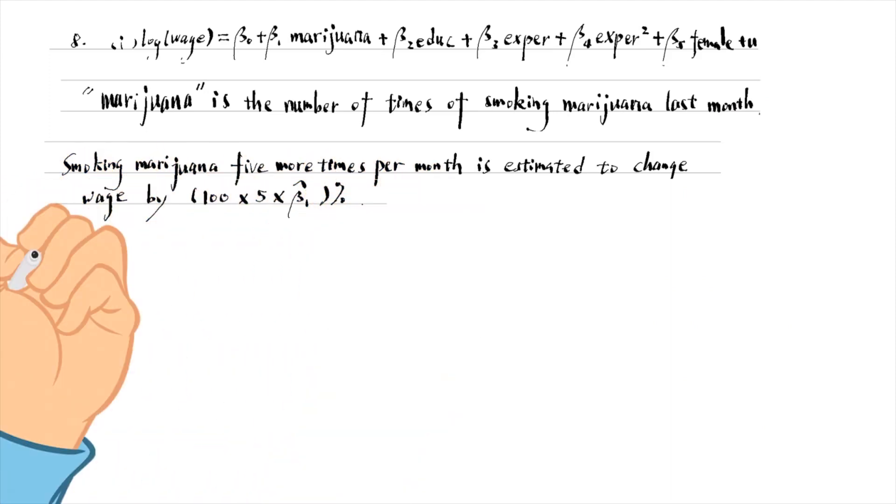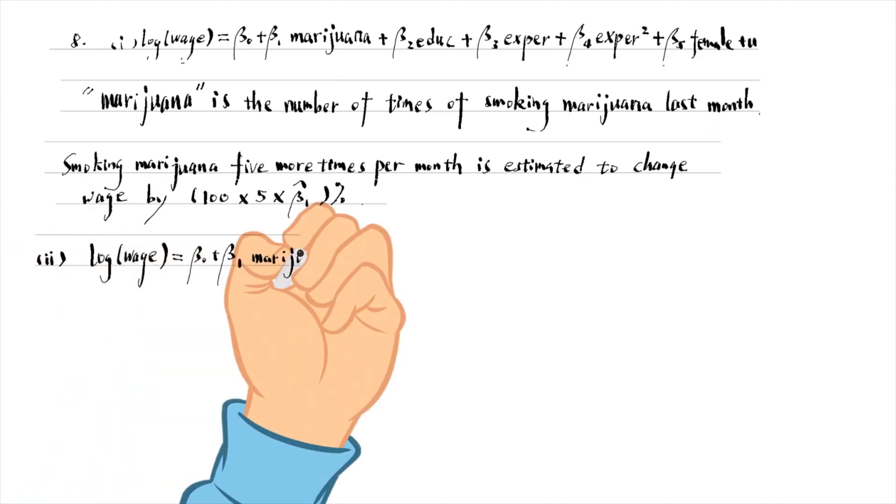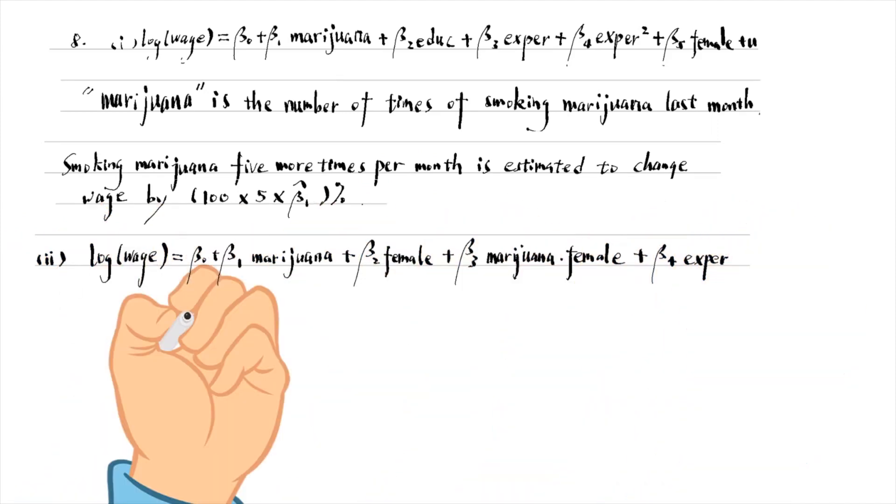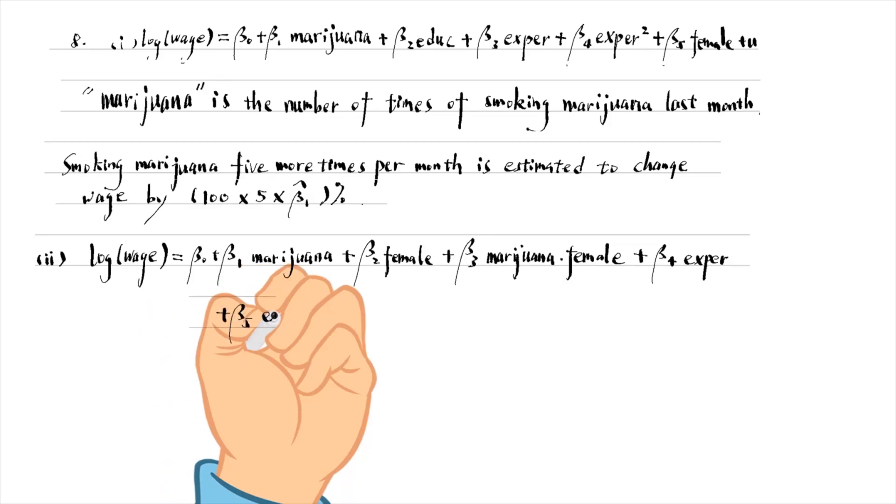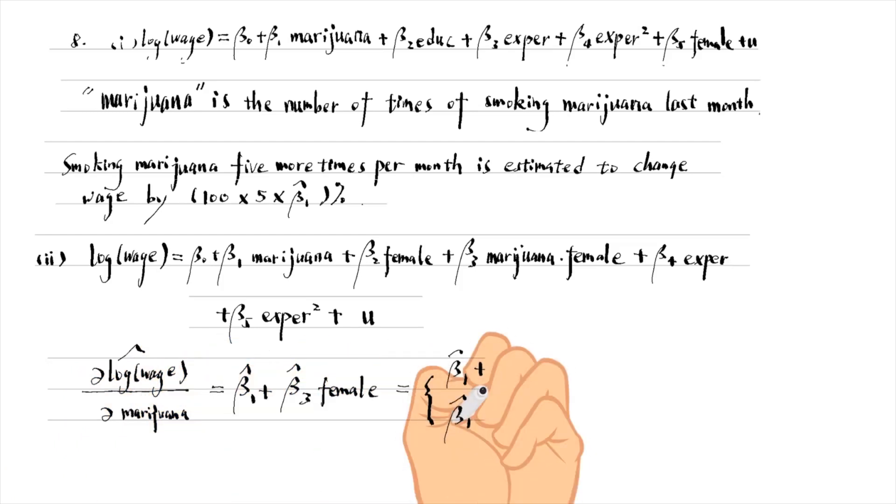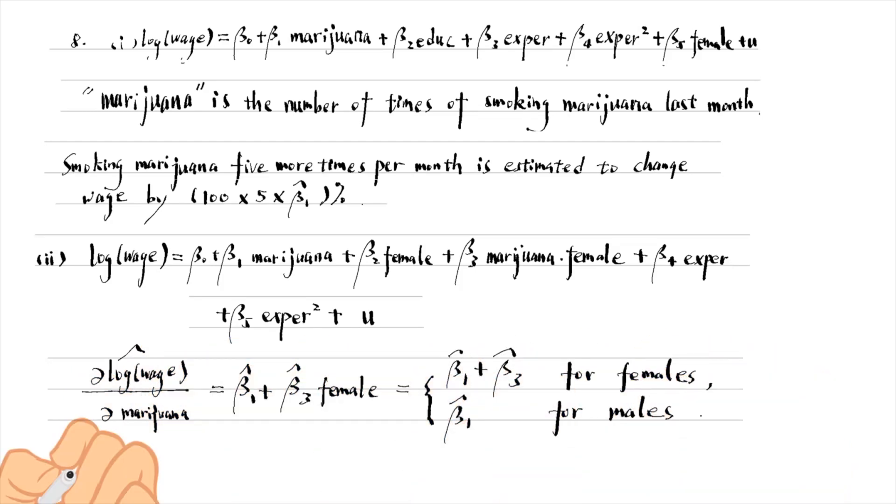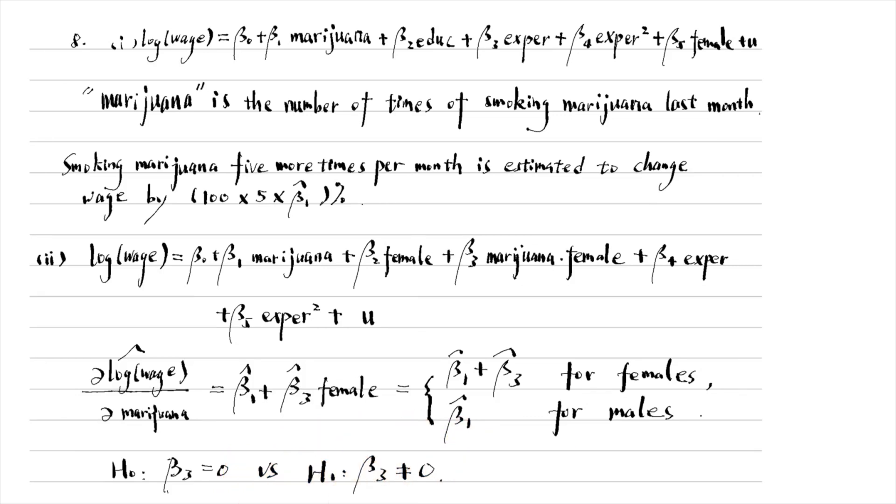For the second question, we can add the interaction between female and marijuana to the model. The calculus shows that the partial effect of marijuana usage on wage depends on gender. It is the sum of beta 1 and beta 3 for females, and it is beta 1 for males. The null hypothesis that there are no differences in the effects of drug usage for men and women is beta 3 equals 0. The alternative hypothesis is that beta 3 does not equal 0.